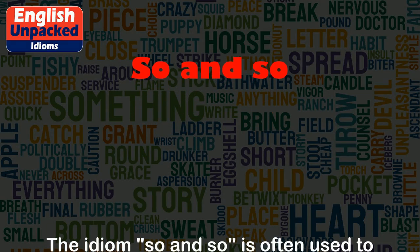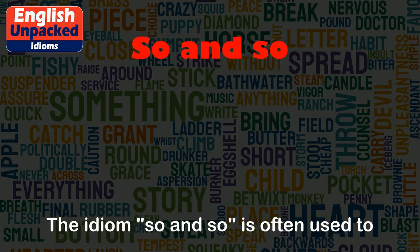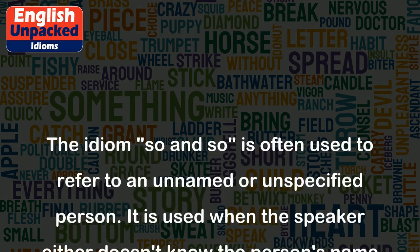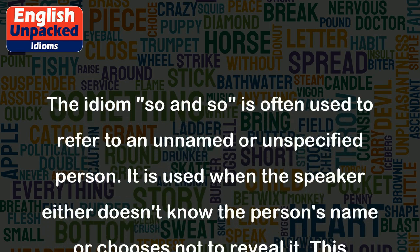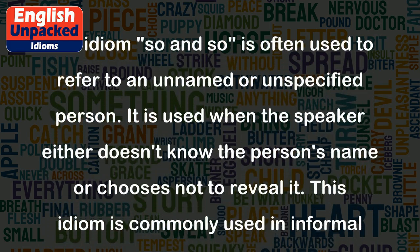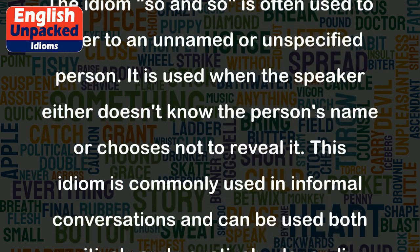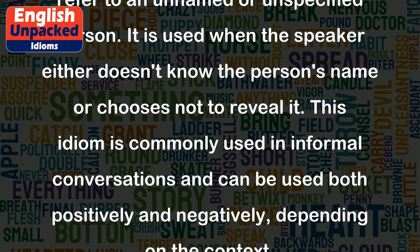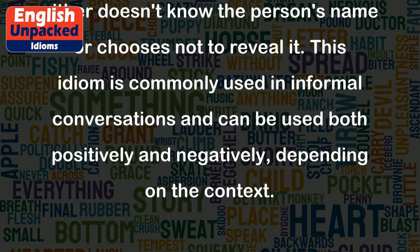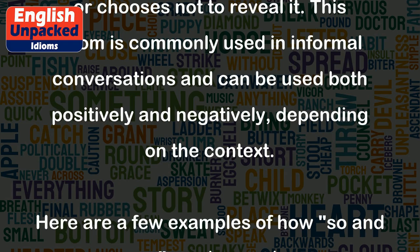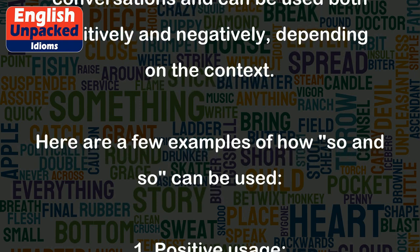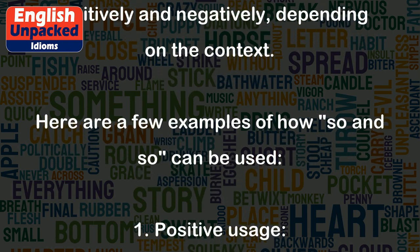The idiom "so and so" is often used to refer to an unnamed or unspecified person. It is used when the speaker either doesn't know the person's name or chooses not to reveal it. This idiom is commonly used in informal conversations and can be used both positively and negatively, depending on the context.